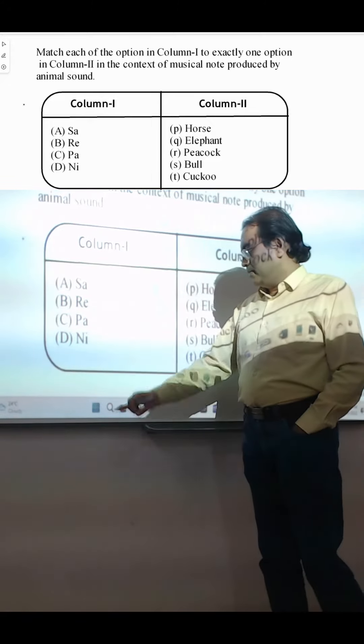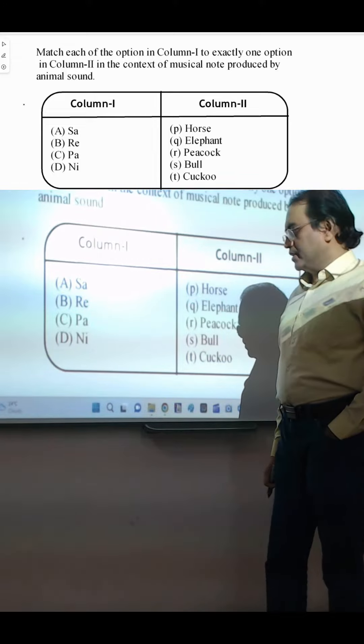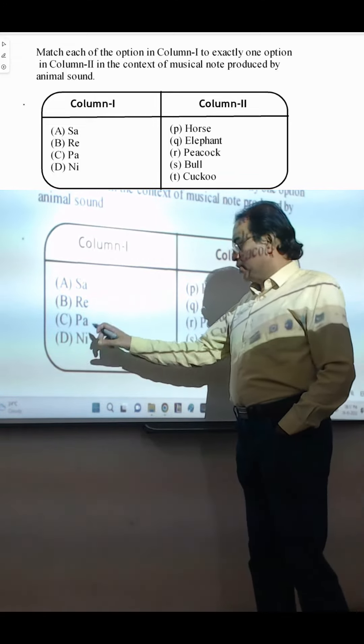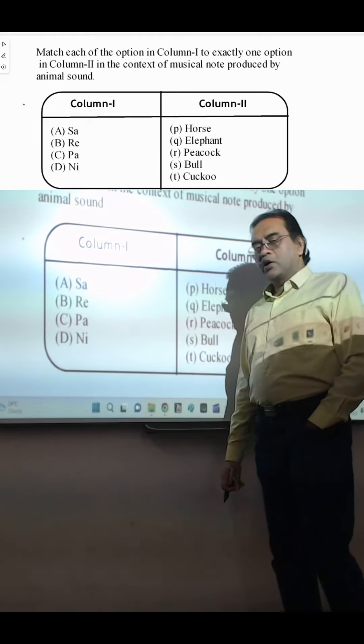Then, the last one, Ni or Nishat. This is related to Elephant, that is Gaj.